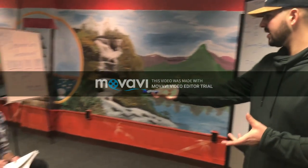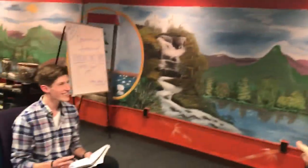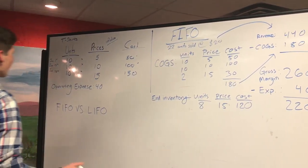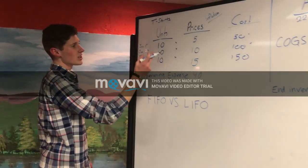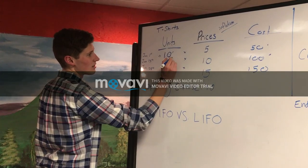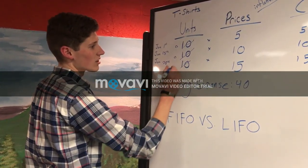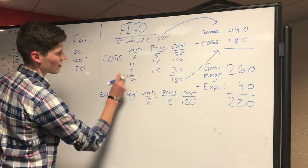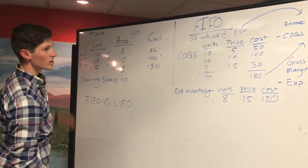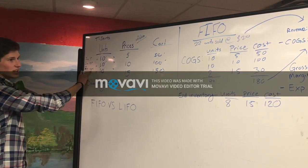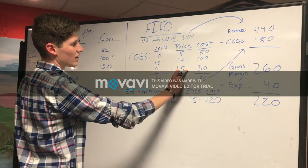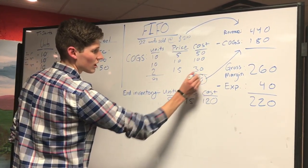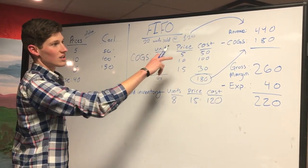Tom, didn't you get a hundred on the homework? Why, yes I did. Would you like to explain to the class FIFO? I would love to. Well, with FIFO, because it's first in first out, you're going to take the first 22 units. So we take ten from here, leaving zero, ten from here, leaving zero, and only two from here, leaving eight. So that sums up 22 units: ten from January 1st, ten from January 15th, and two from January 28th. When you multiply these out, ten times five equals fifty, and so on for a total of one hundred and eighty dollars, which is your COGS — your cost of goods sold.